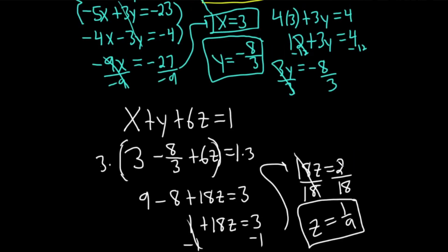x is 3, so I'm going to write the answer here in yellow. We have parentheses 3, negative 8 thirds, that's the y, and then the z is 1 ninth.